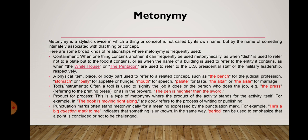Product for process: this is a type of metonymy where the product of the activity stands for the activity itself. For example, in 'the book is moving right along,' the book refers to the process of writing or publishing. Punctuation marks often stand metonymically for a meaning expressed by the punctuation mark — for example, 'he is a big question mark to me' indicates that something is unknown. In the same way, 'period' can be used to emphasize that a point is concluded and not to be challenged or changed.